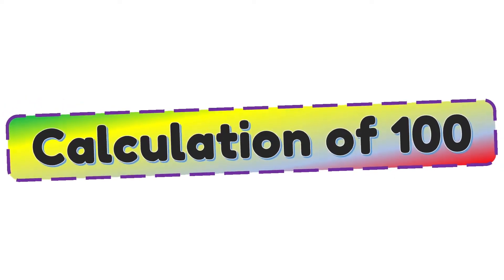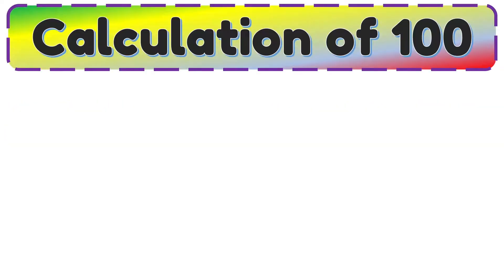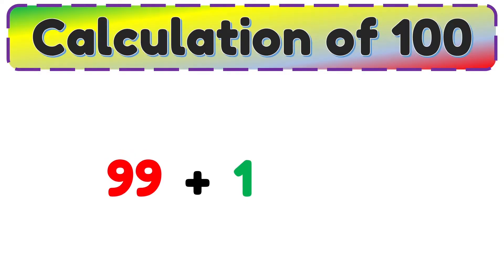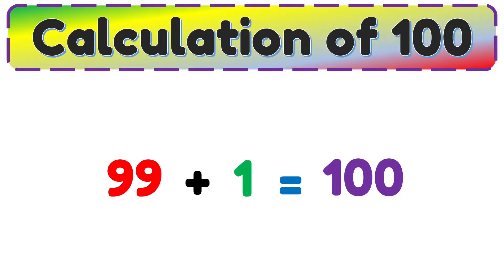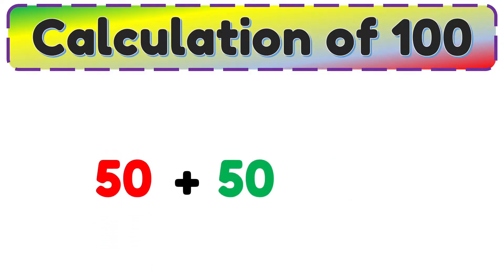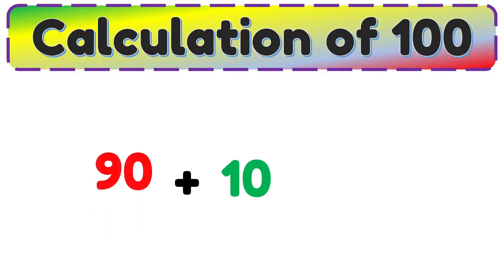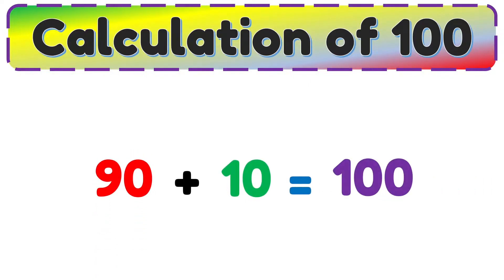Calculation of 100. 99 plus 1 is equal to 100. 50 plus 50 is equal to 100. 90 plus 10 is equal to 100.